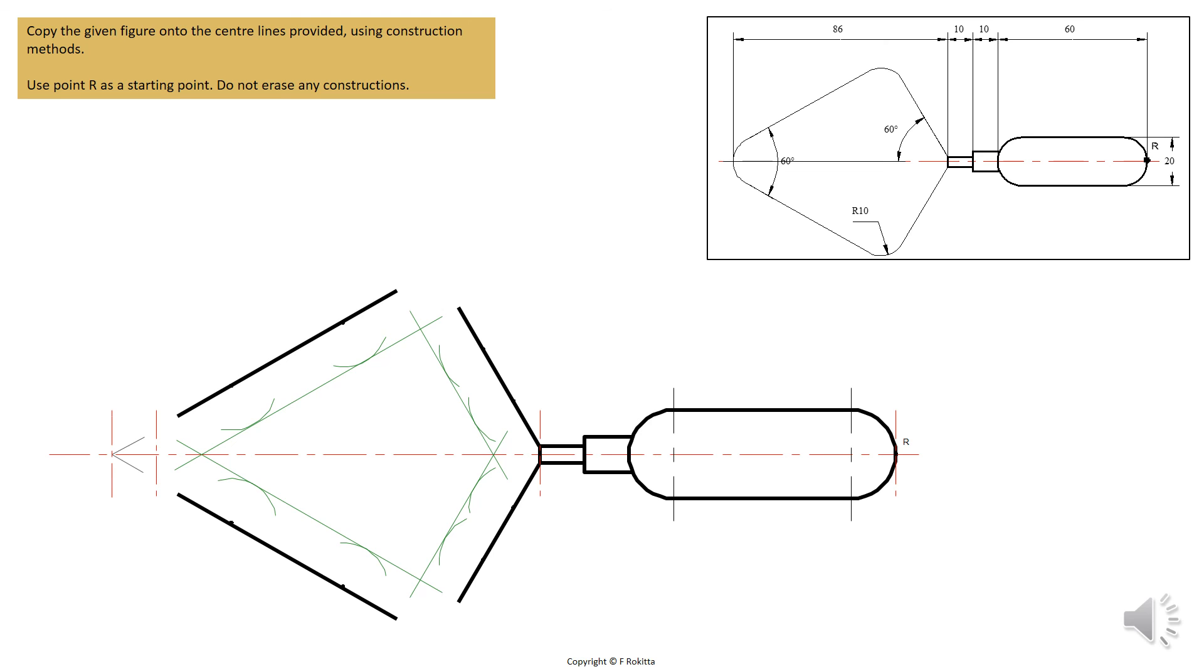With all the constructions now complete we will label the center point of each one of the corners as shown here. Place your compass at O1, stretch it to a radius of 10 mm as indicated in the 2D schematic and draw a solid arc to close off the outer edge. Do this at each one of the corners. This will complete the construction of your model.